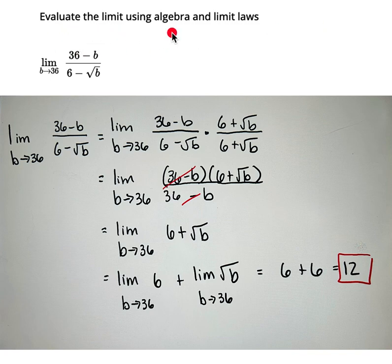Evaluate the limit using algebra and limit laws. We're going to find the limit of the two-sided limit as b approaches 36 of 36 minus b all over 6 minus the square root of b.